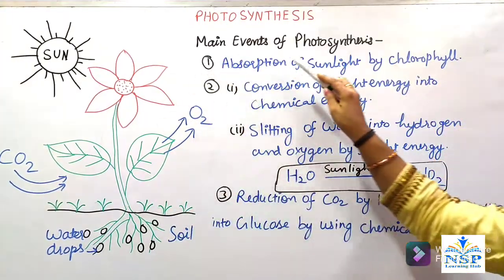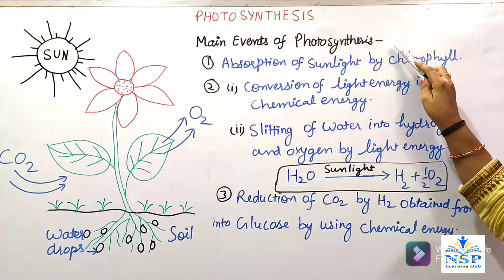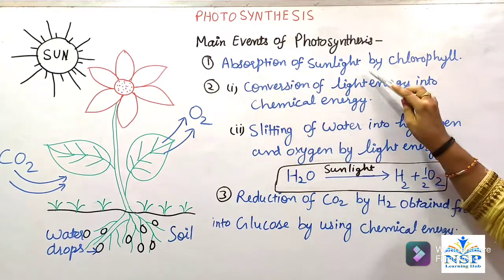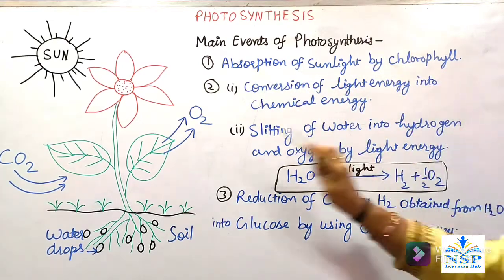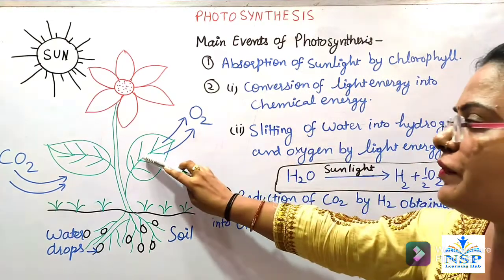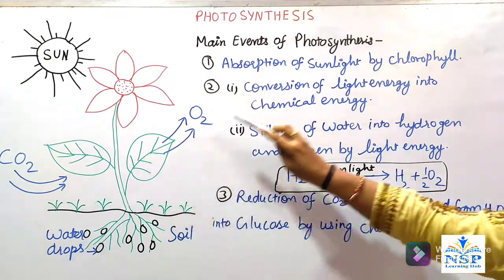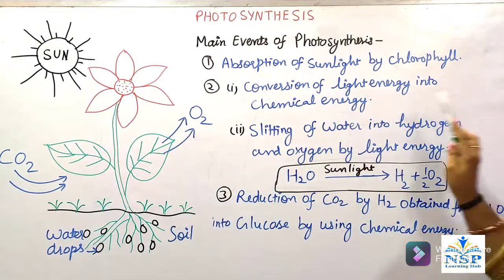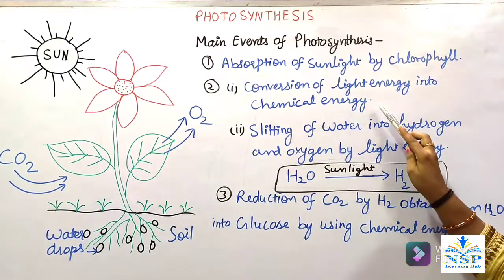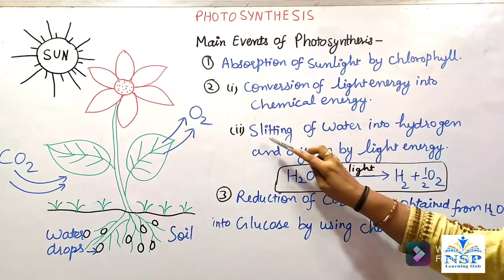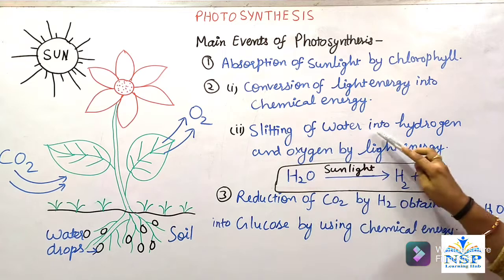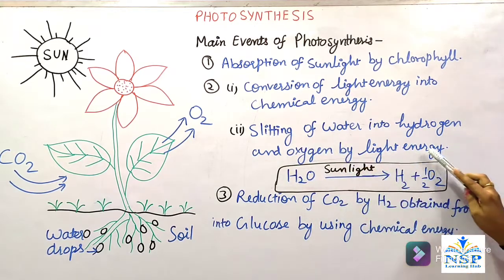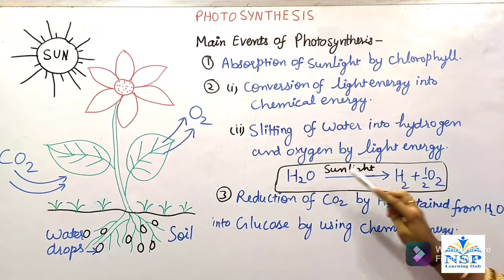The main events of photosynthesis are: absorption of sunlight by chlorophyll present in the chloroplast of green leaves; conversion of light energy into chemical energy; and splitting of water into hydrogen and oxygen by light energy.